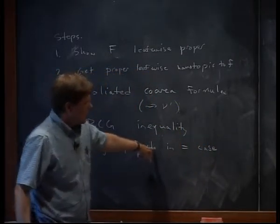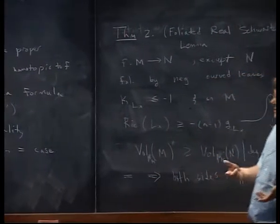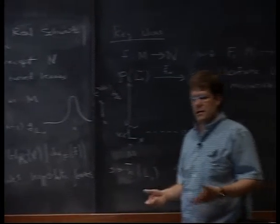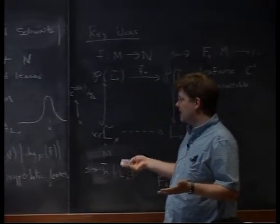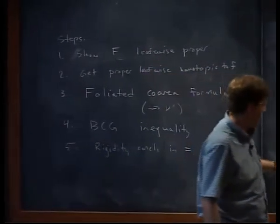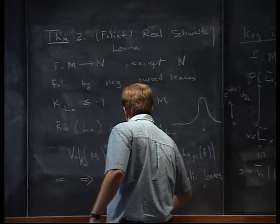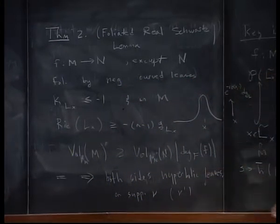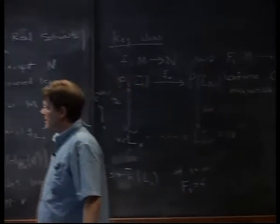So you get that nu-almost every leaf is isometric at the end. But then by the transverse continuity, you can finally get that you have equality, at least on the support of nu. Both sides have hyperbolic leaves on the support of nu and nu-prime on the right — which is basically the push-forward of that support. You can't say anything about where the measure is zero — you could have a measure that's just zero on big chunks of the foliation.